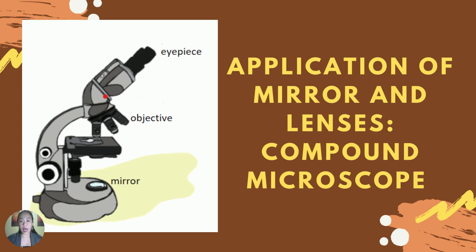Now let's talk about an optical instrument that uses both mirrors and lenses: the compound microscope. It is used to examine microscopic organisms. It has a concave mirror to capture light, and two converging lenses — the objective lens and eyepiece lens — to achieve greater magnification. The first image formed by the objective lens is real, inverted, and enlarged; the final image in the eyepiece lens is virtual, enlarged, and upright.